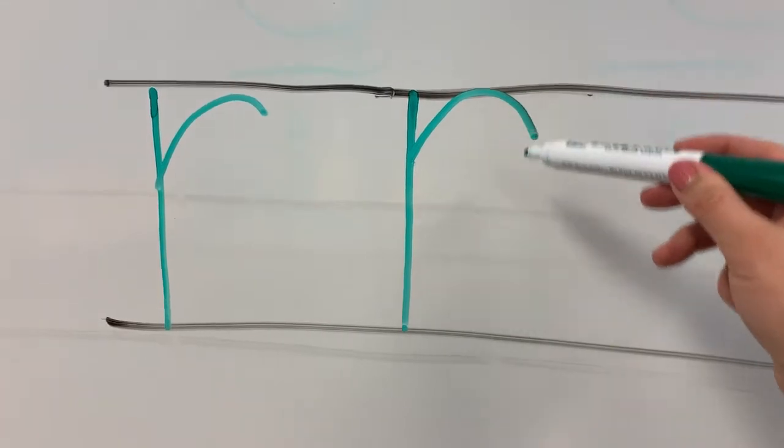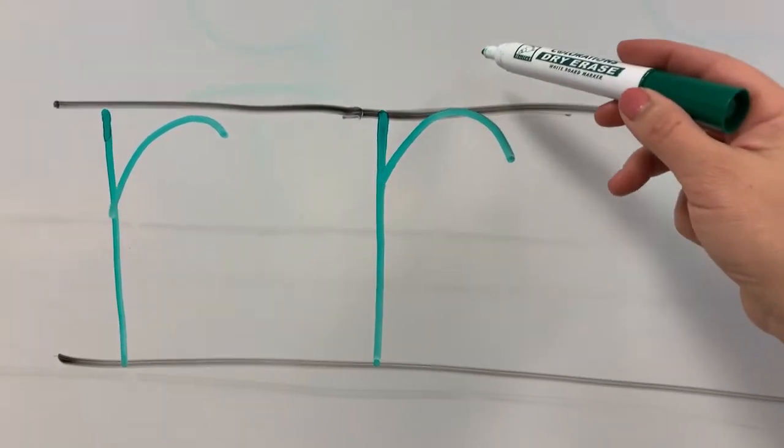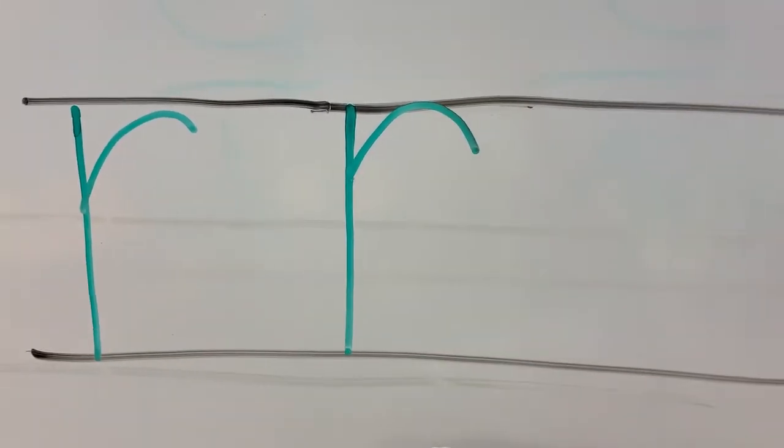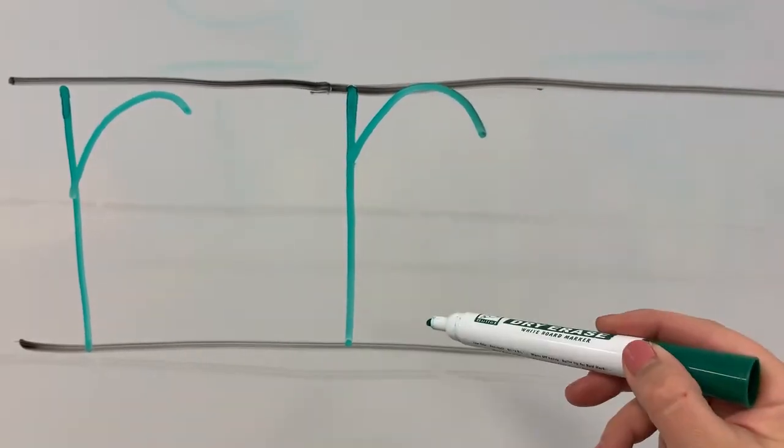So you notice the letter R fits between the two lines. It doesn't go above the line. It doesn't go below the line. It's right in between the lines.